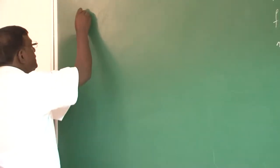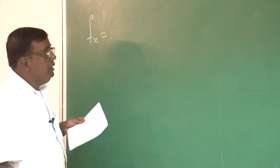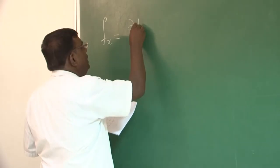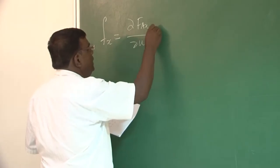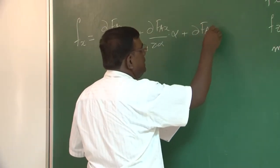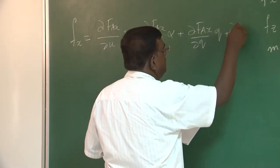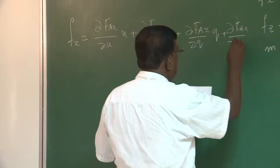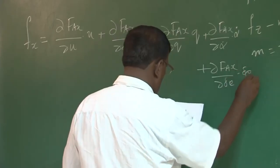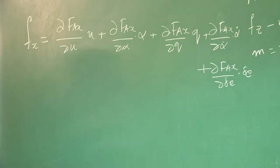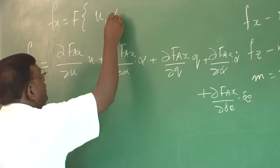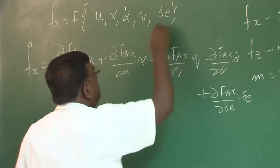We write Fx as a function of u, α, α-dot, q, and δe — this is the first model assumption, valid for small disturbances. Expanding using partial derivatives: Fx = (∂Fax/∂u)·u + (∂Fax/∂α)·α + (∂Fax/∂q)·q + (∂Fax/∂α-dot)·α-dot + (∂Fax/∂δe)·δe, where all derivatives are evaluated at steady state.